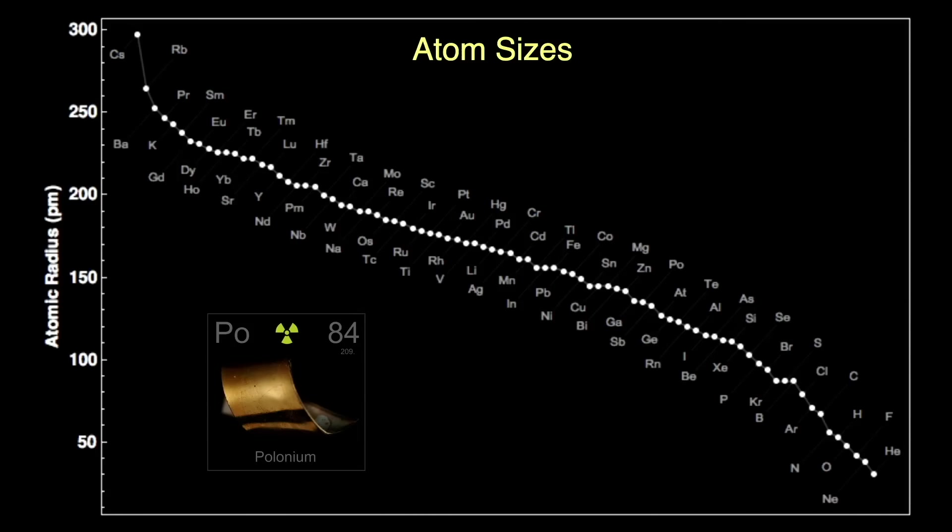Looking at all the atom sizes, here we see them sorted from largest, cesium at the top left, to smallest, helium on the bottom right. Polonium has the 58th largest size atom of the elements, between gallium and antimony.